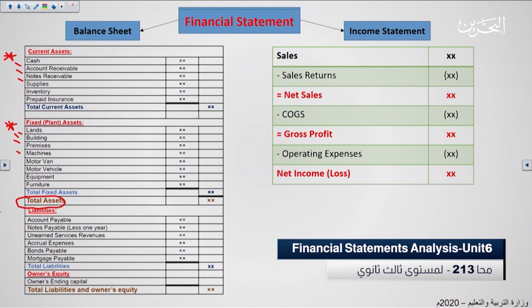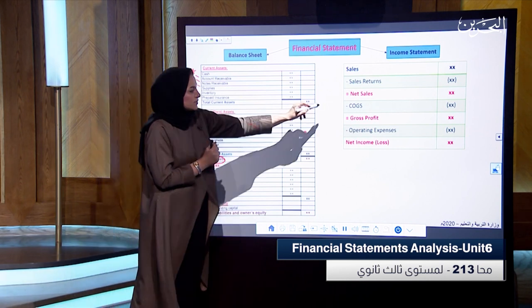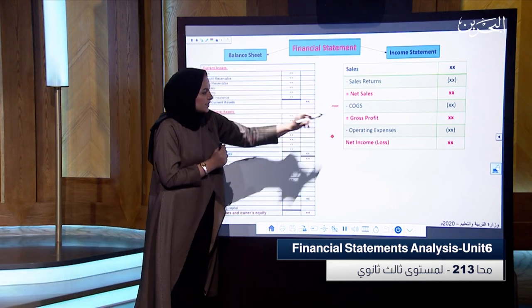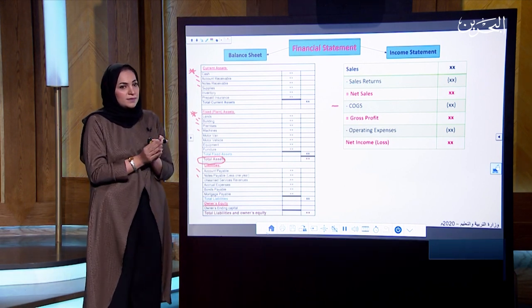Let's take a quick refresh on liabilities. Liabilities include accounts payable, notes payable, and unearned service revenue, plus the owner's ending capital, which together equal total liabilities and owner's equity. The income statement shows: sales minus sales returns equals net sales, minus cost of goods sold equals gross profit, minus operating expenses equals net income.